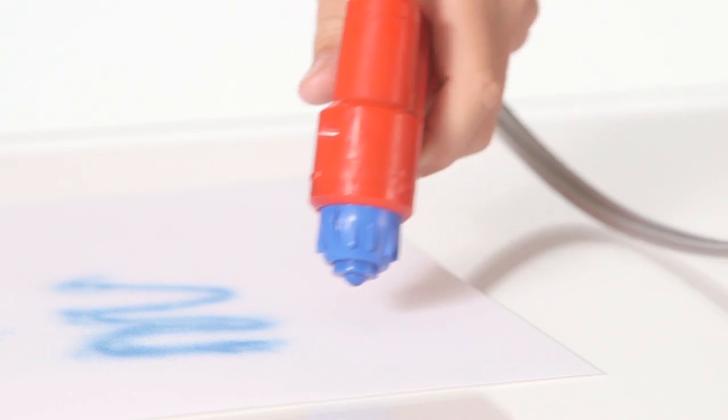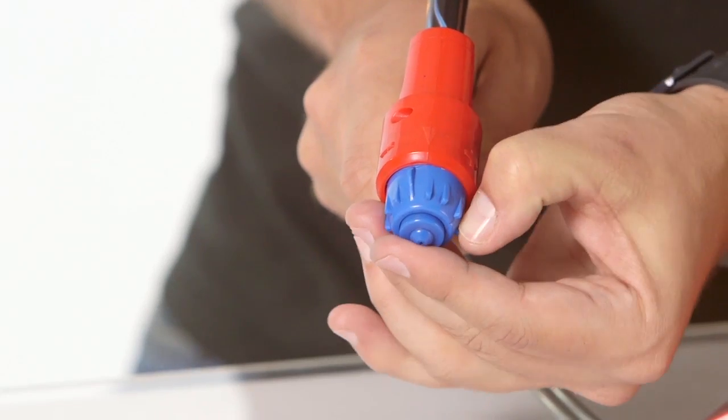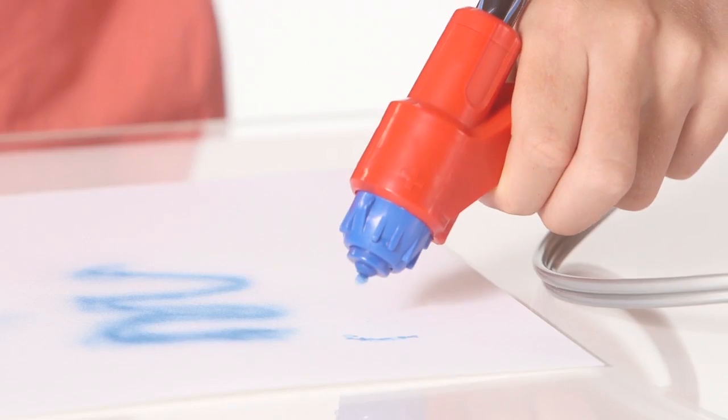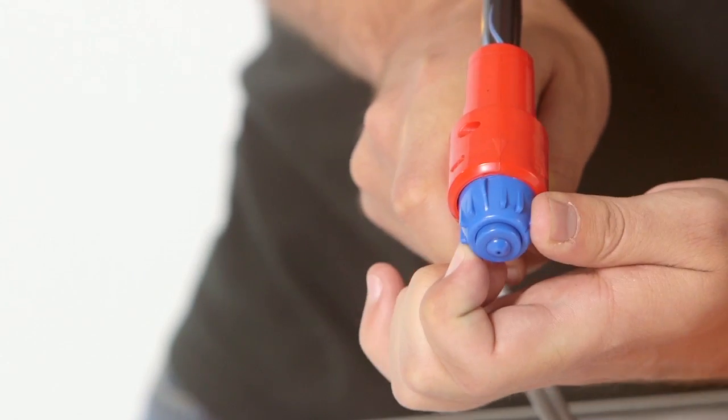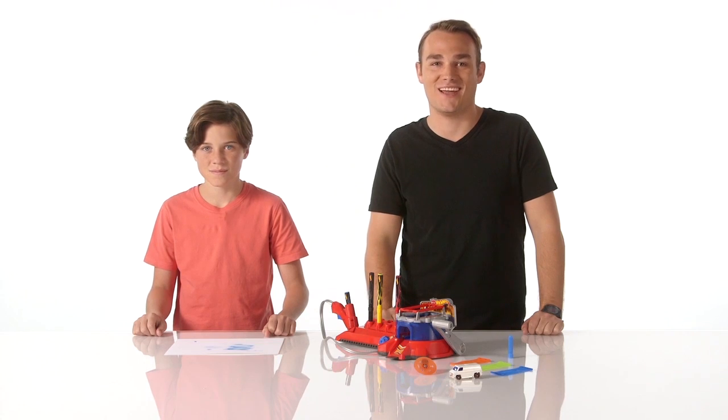If little or no ink comes out, adjust the knob slightly to the positive side and test again. If the ink foams at the tip, adjust the dial slightly towards the negative side. You'll want to readjust after each pen.